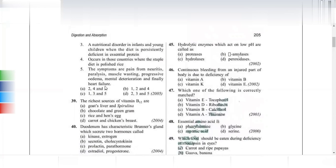Hydrolytic enzymes that act at low pH (around 1.8, i.e., below 7) are proteases. Pepsin is a protease and renin is a protease — both act in the very low pH environment of the stomach.